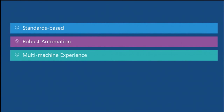In order to do that, we have to rethink and reimagine single-server concepts in the context of lots of machines. These fall into three areas: standards-based management, robust automation, and multi-machine management.